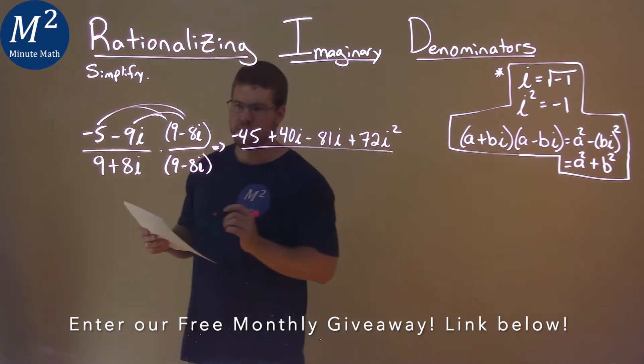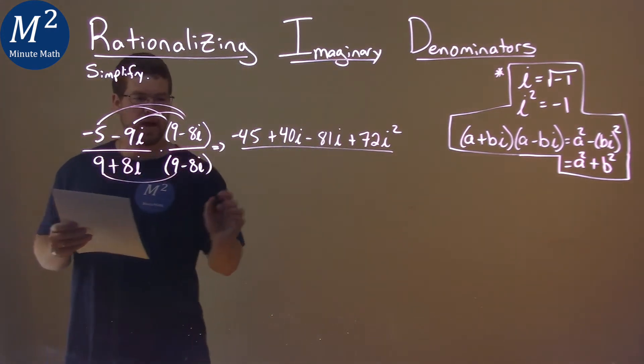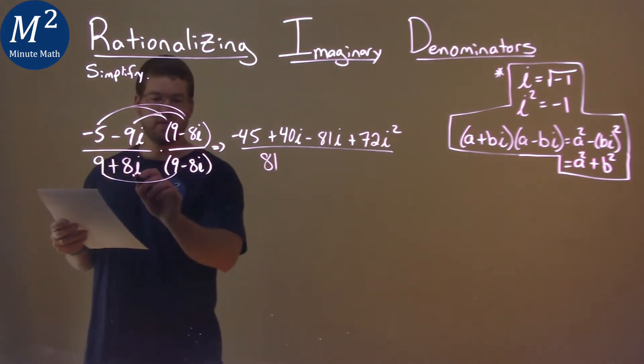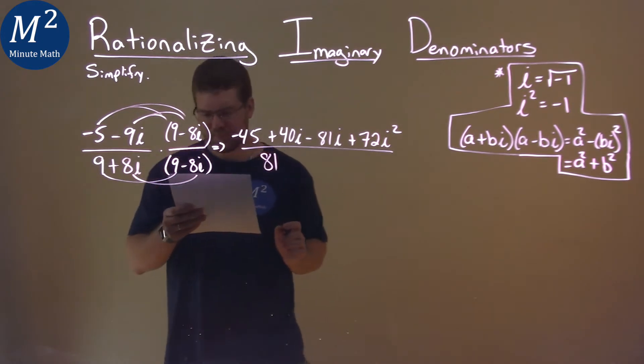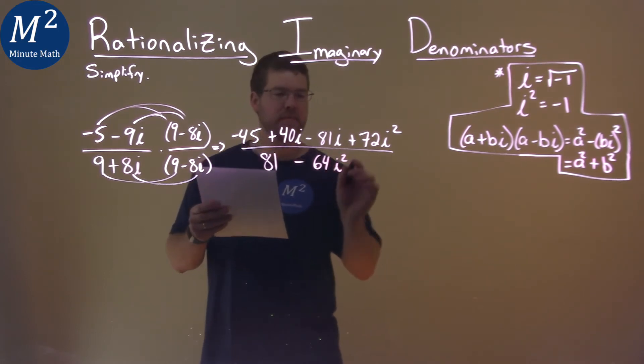Denominator now. We're multiplying by its conjugate. So 9 times 9 is 81, and the whole beauty of this is that we have to do the second two numbers multiplied. 8i times negative 8i is negative 64, and then we have i squared.